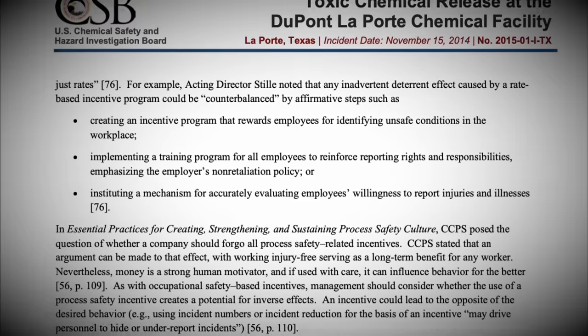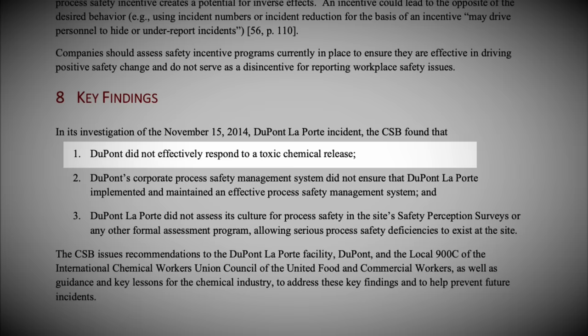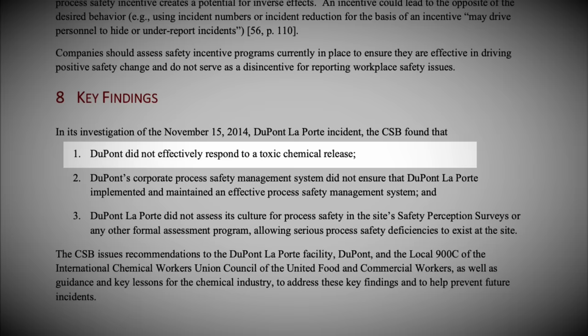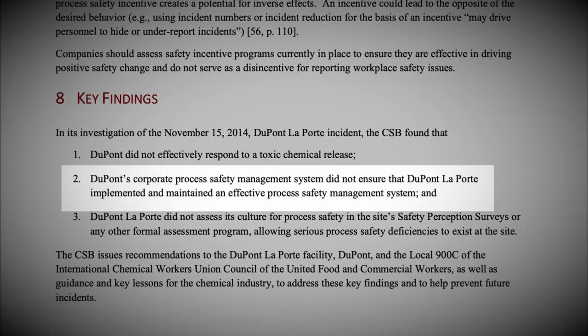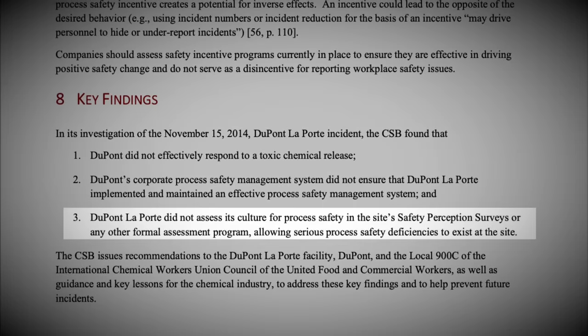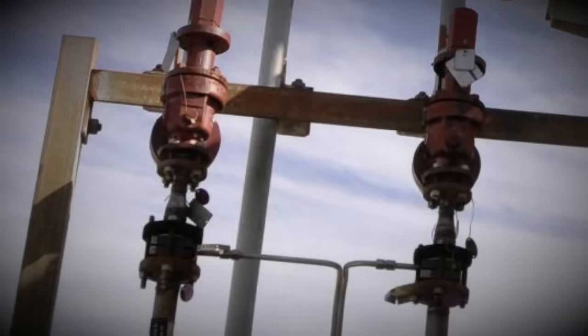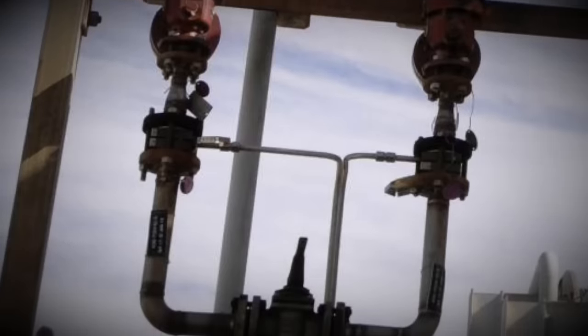In its investigation of the November 15th, 2014 DuPont-Laporte incident, the CSB found that: 1. DuPont did not effectively respond to a toxic chemical release. 2. DuPont's corporate process safety management system did not ensure that DuPont-Laporte implemented and maintained an effective process safety management system. And 3. DuPont-Laporte did not assess its culture for process safety in the site's safety perception surveys, or any other formal assessment program, allowing serious process safety deficiencies to exist at the site. In total, approximately 24,000 pounds of the very toxic methyl mercaptan was released into the environment, which took the lives of four, and injured many more.